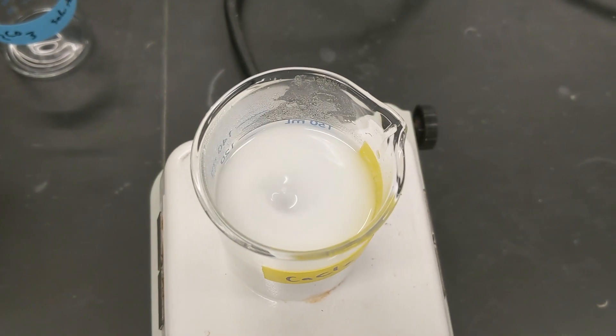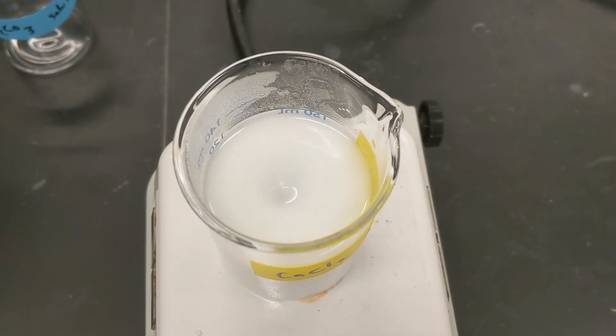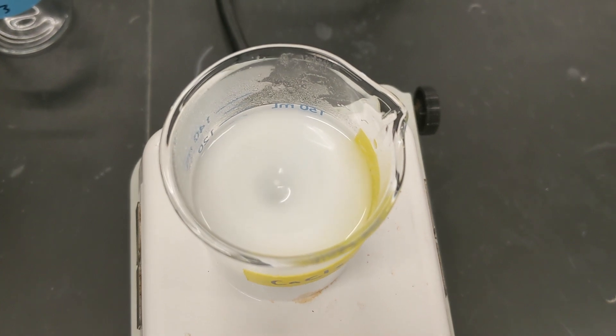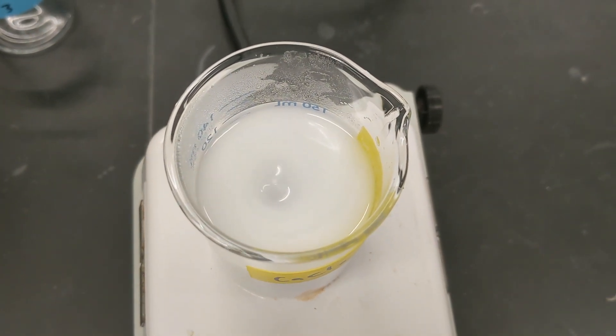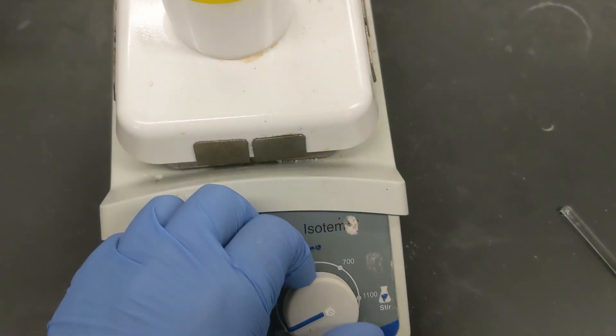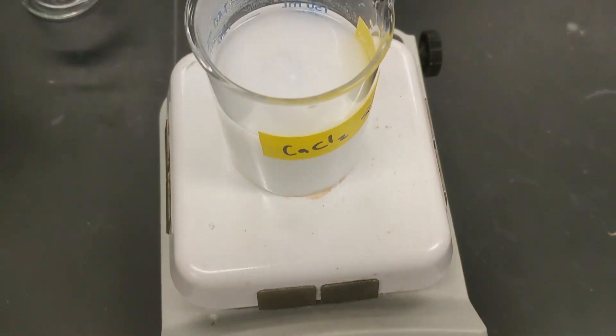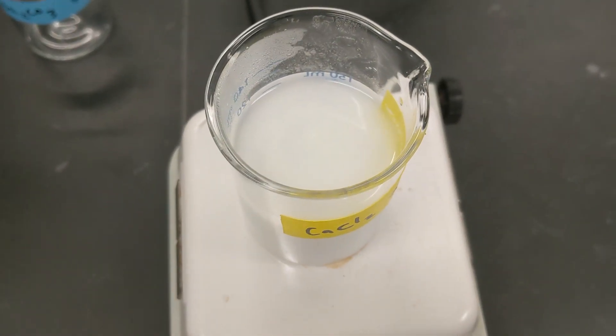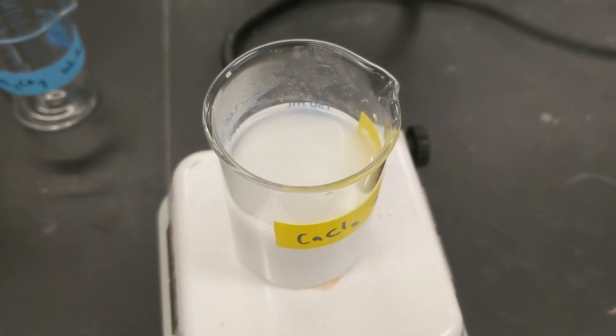So it's been about two minutes and we can see that it's still stirring and it has that white precipitant formed. So now I'm going to turn off the stirring to allow the precipitant to settle to the bottom of the beaker before we start filtering.